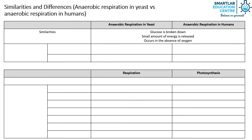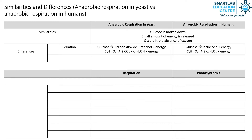The first difference between both processes is the equation, as shown. The second difference is the product formed. In anaerobic respiration in yeast, carbon dioxide and ethanol are produced. In anaerobic respiration in humans, lactic acid is produced.